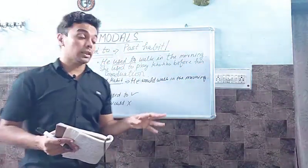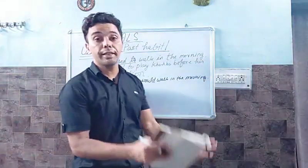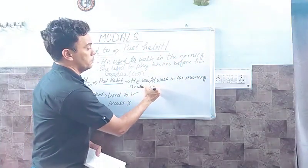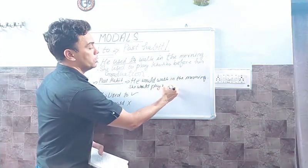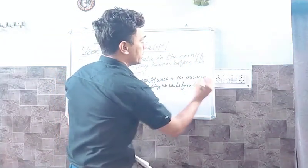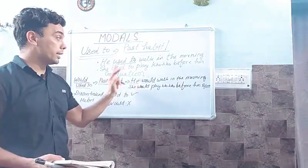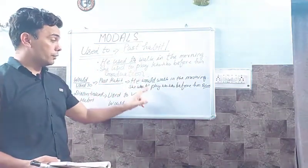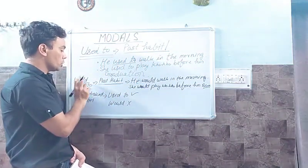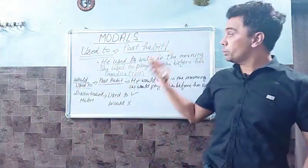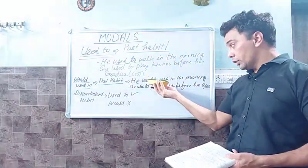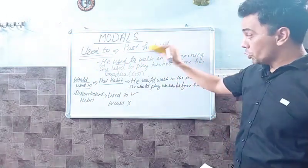So 'would' and 'used to' can both be used for past habit. For example, 'He used to walk in the morning' can be replaced by 'He would walk in the morning.' Similarly, 'She used to play Koko before her graduation' can be written as 'She would play Koko before her graduation.' Both are correct — 'would' and 'used to' can replace each other to show past habit.